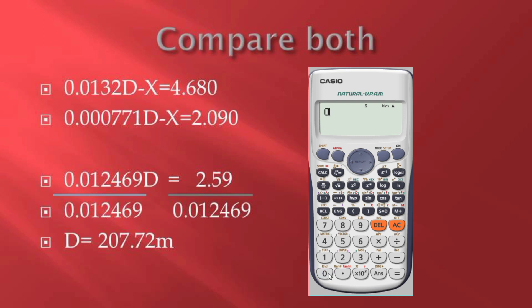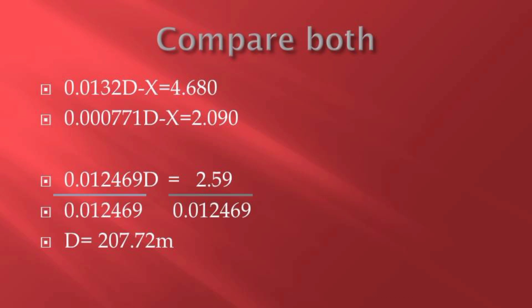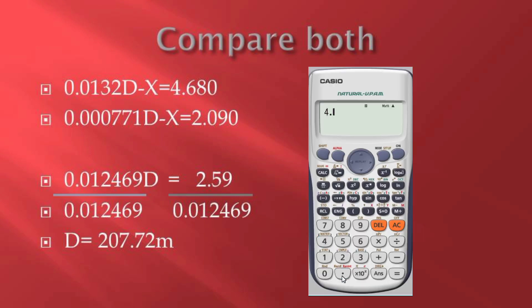By moving X to the opposite sides there we have a subtraction. In places where I have same sign we subtract. By subtracting our D we get our answer 0.0012469D. Our X has disappeared because minus X minus minus X, there we have a zero. So here we minus 4.68 minus 2.090 getting our answer 2.59. By dividing what we had on the other side, our D that is the horizontal distance becomes 207.72 meters.